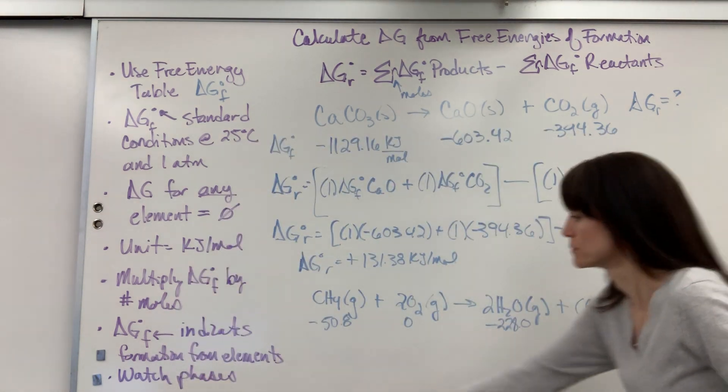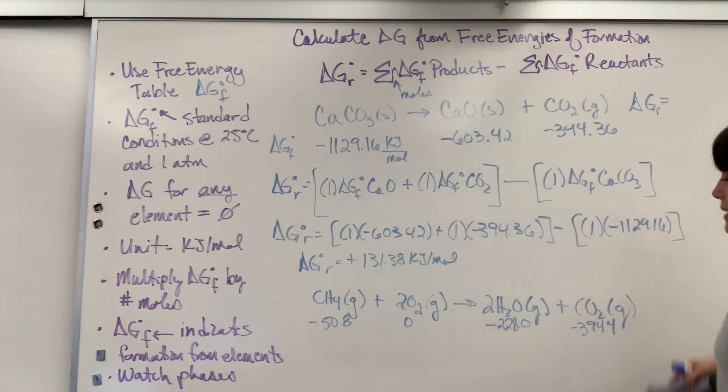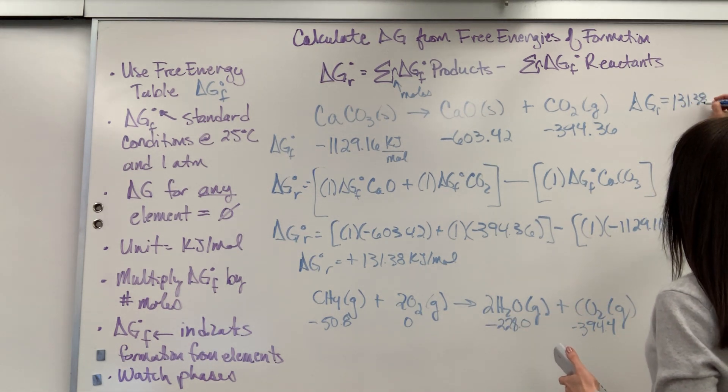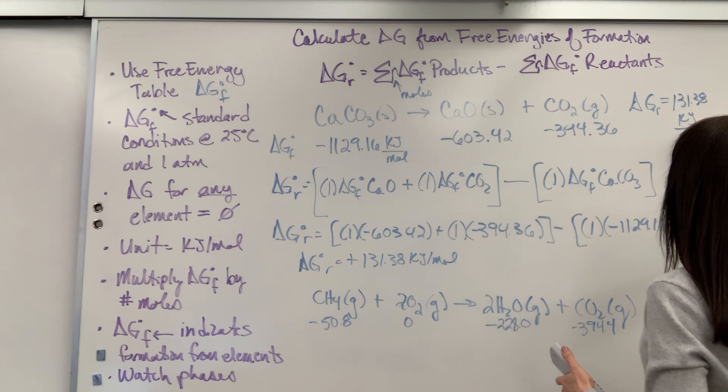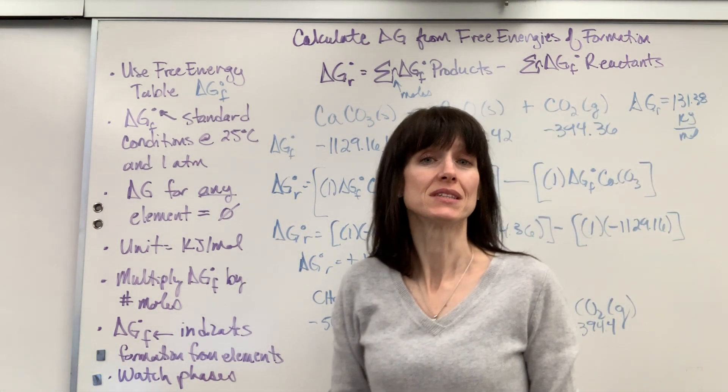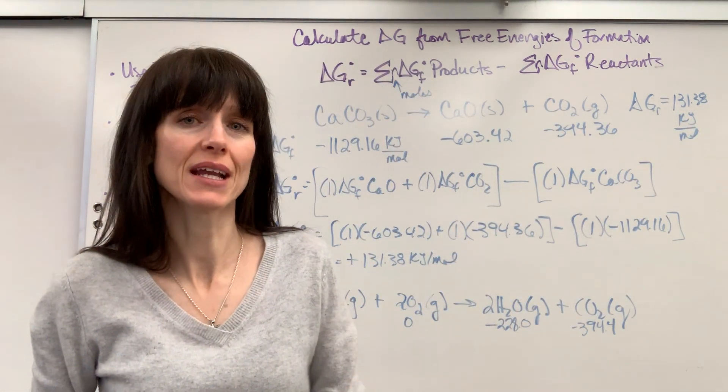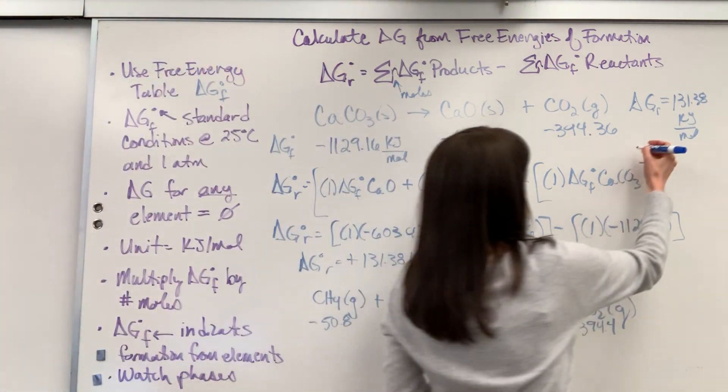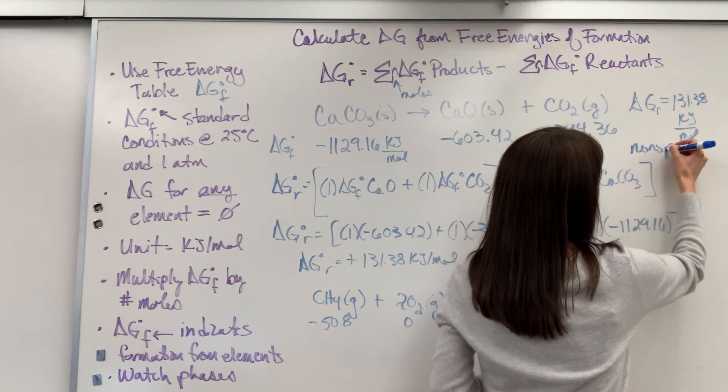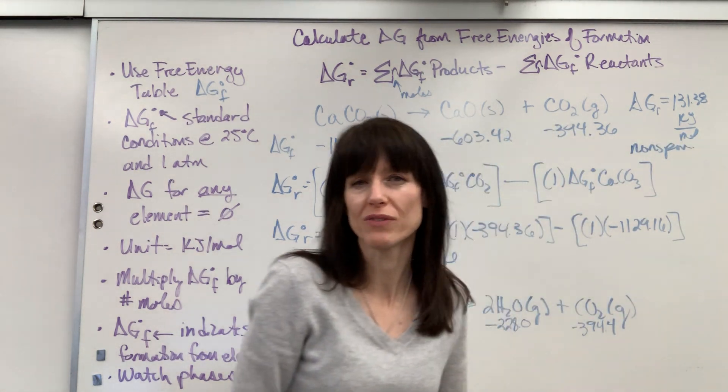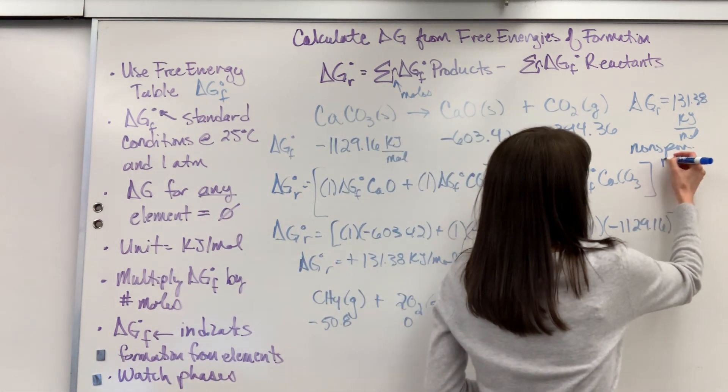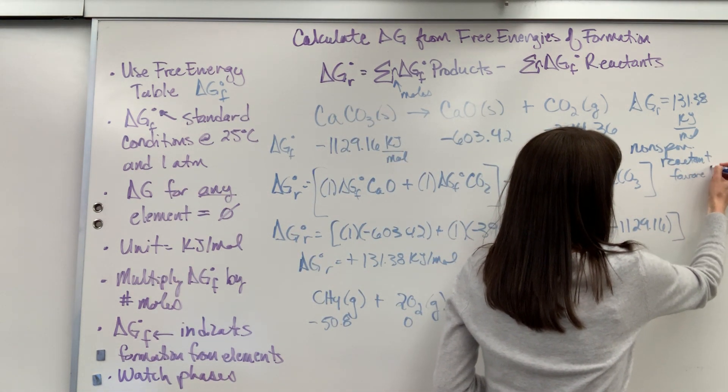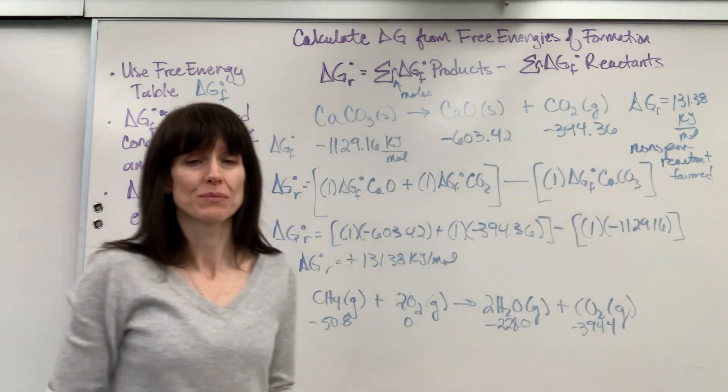And interpret it. Let's take just a second to interpret it. 131.38 kilojoules per mole. It's positive. It means non-spontaneous, thermodynamically unfavorable, and it also means that it's reactant-favored. So I'm going to put non-spon, that's my fun little abbreviation for non-spontaneous, and it's reactant-favored. And it's all because that is positive, because it's positive.